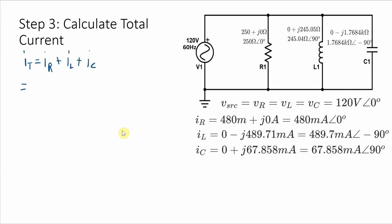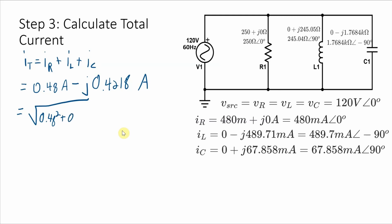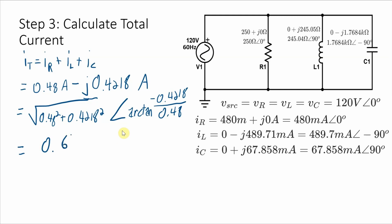To do this addition, I take the values in rectangular coordinates and add the real parts: 480 milliamps plus zero plus zero gives 0.48 amps. Then adding the imaginary parts: zero minus 489.71 milliamps plus 67.858 milliamps gives minus j·0.4218 amps. In polar coordinates, that's the square root of 0.48² plus 0.4218² for the magnitude, and the phase angle is arctan of −0.4218 divided by 0.48. I get 0.639 amps at a phase angle of negative 41.31 degrees.